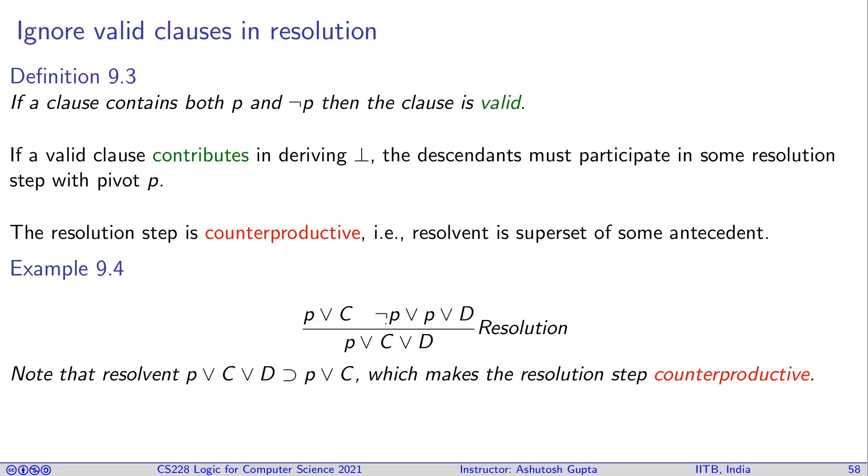Let's suppose you have P or C and you apply not P or P or D in the resolution. This one has both P and D. And when you resolve this, let's say P and not P, you get P or C or D.